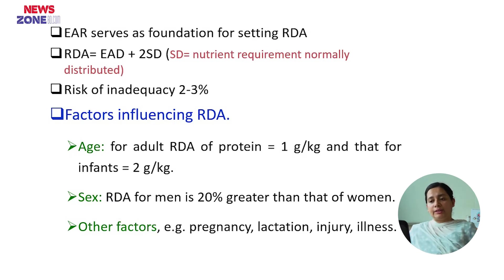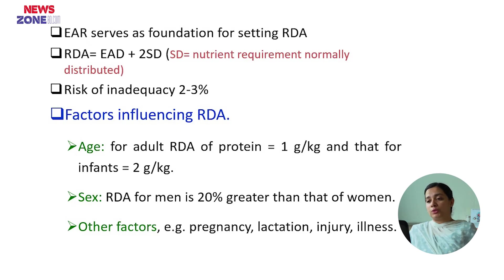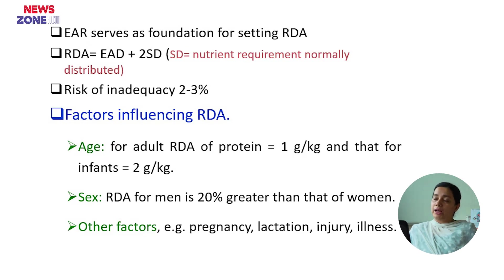Factors that influence the RDA include age, sex, and other factors. For adult RDA of protein, it is 1 gram per kg, and for infants, 2 gram per kg. For adults, the age group is typically 20 to 40 years. For sex, the recommended dietary allowance for men is 20% greater than that of women, meaning females have a lower calorie requirement. Other factors include pregnancy, lactation, injury, or illness — these will change the RDA.